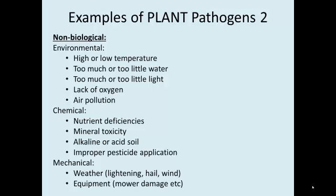There are chemical things that can cause disease. Nutrient deficiencies — if there's not enough nitrogen or enough of some micronutrients — any of those can lead to a stressed plant that then causes disease. Conversely, you can have too much of some nutrients, or some minerals that are not nutrients at all, that can cause disease. The soil can be too acidic or too alkaline. And much damage to plants agriculturally is done by improper application of pesticides — either the wrong pesticide for the disease at hand, too high a dose, the wrong day, too hot, or too windy.